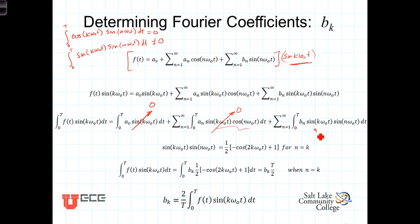we end up with the sine squared of k omega-0 t. When n equals k, we have the sine of k omega-0 t times the sine of k omega-0 t.